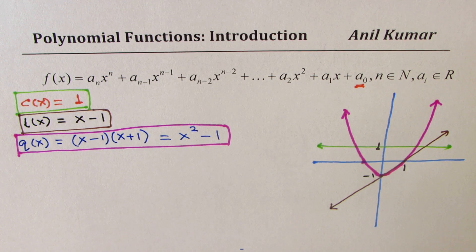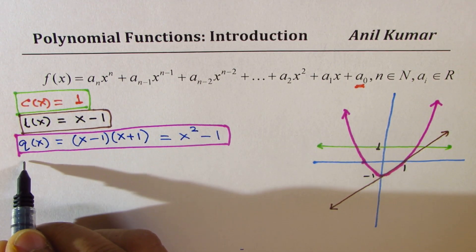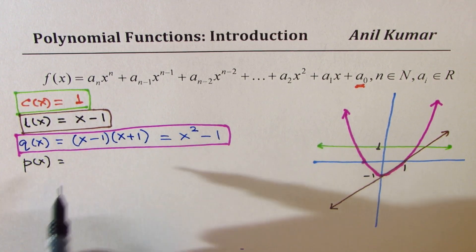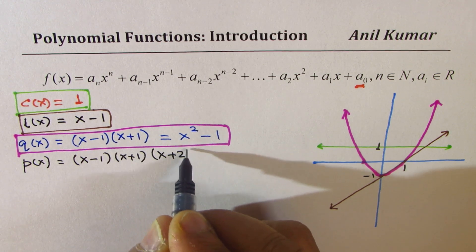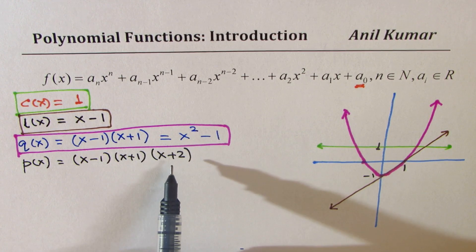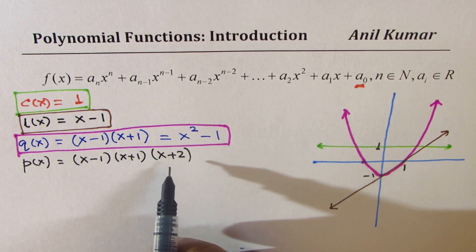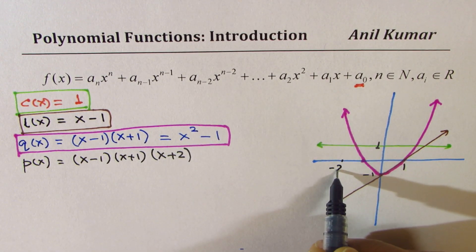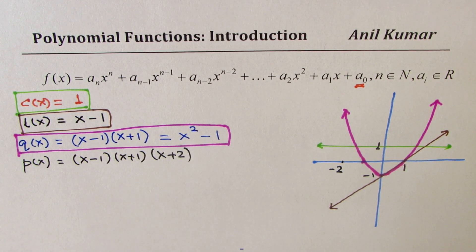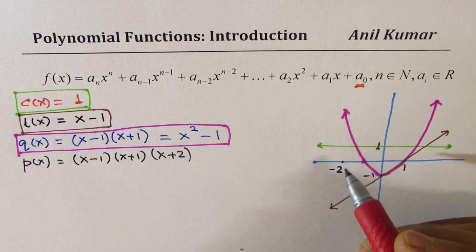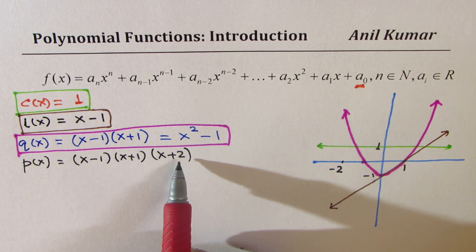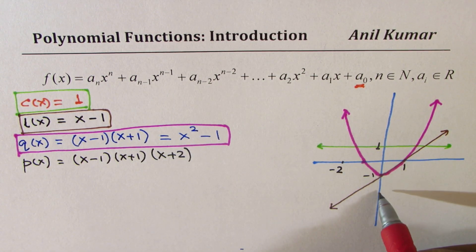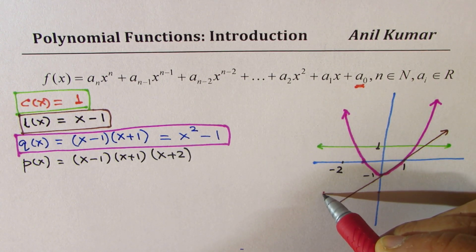Whatever I am drawing here, these are all polynomials, and what I'm doing is adding factors. Now let me have another function — p(x). This time I will multiply (x minus 1) and (x plus 1) by another factor, say (x plus 2). If I do that, on a graphing calculator you will see that it adds an x-intercept at minus 2. This particular graph looks like a cubic function starting from quadrant 3, going through these x-intercepts, and if x is 0 the value is minus 2.